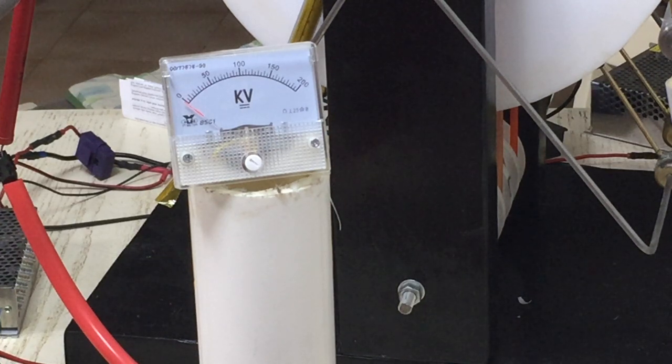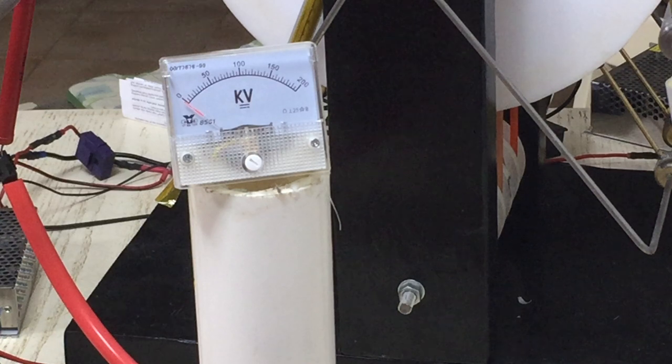The way you get these kilovolt meters to become kilovolt meters, other than they have kilovolts written on them, is you need a high voltage resistor of the proper value to give you 100 milliamps at the maximum reading. Because they're zero to 100 microamp meters, you need a resistor that'll give you that 100 microamps.